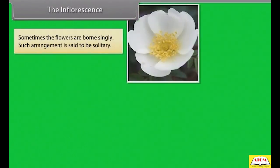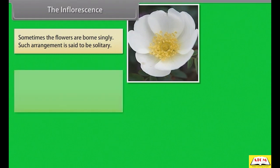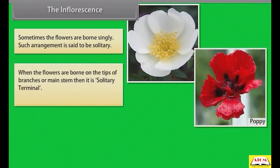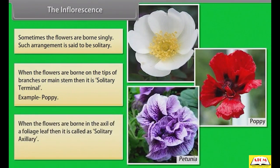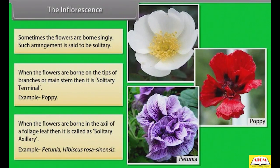Sometimes the flowers are borne singly; such arrangement is said to be solitary. When the flowers are borne on the tips of branches or main stem, then it is solitary terminal — example: poppy. When the flowers are borne in the axil of a foliage leaf, then it is called solitary axillary — example: Petunia, Hibiscus rosa-sinensis.